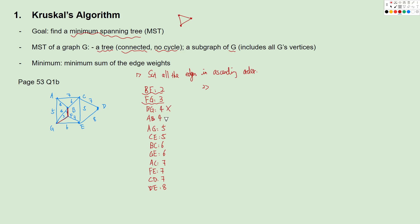The next edge is AB. There is no cycle, so we link AB. Next is AG — if we link AG, we will have a cycle A, B, F, G, A, so we reject this edge. Then we look at CE. If we link CE, there is no cycle, so we add this edge.